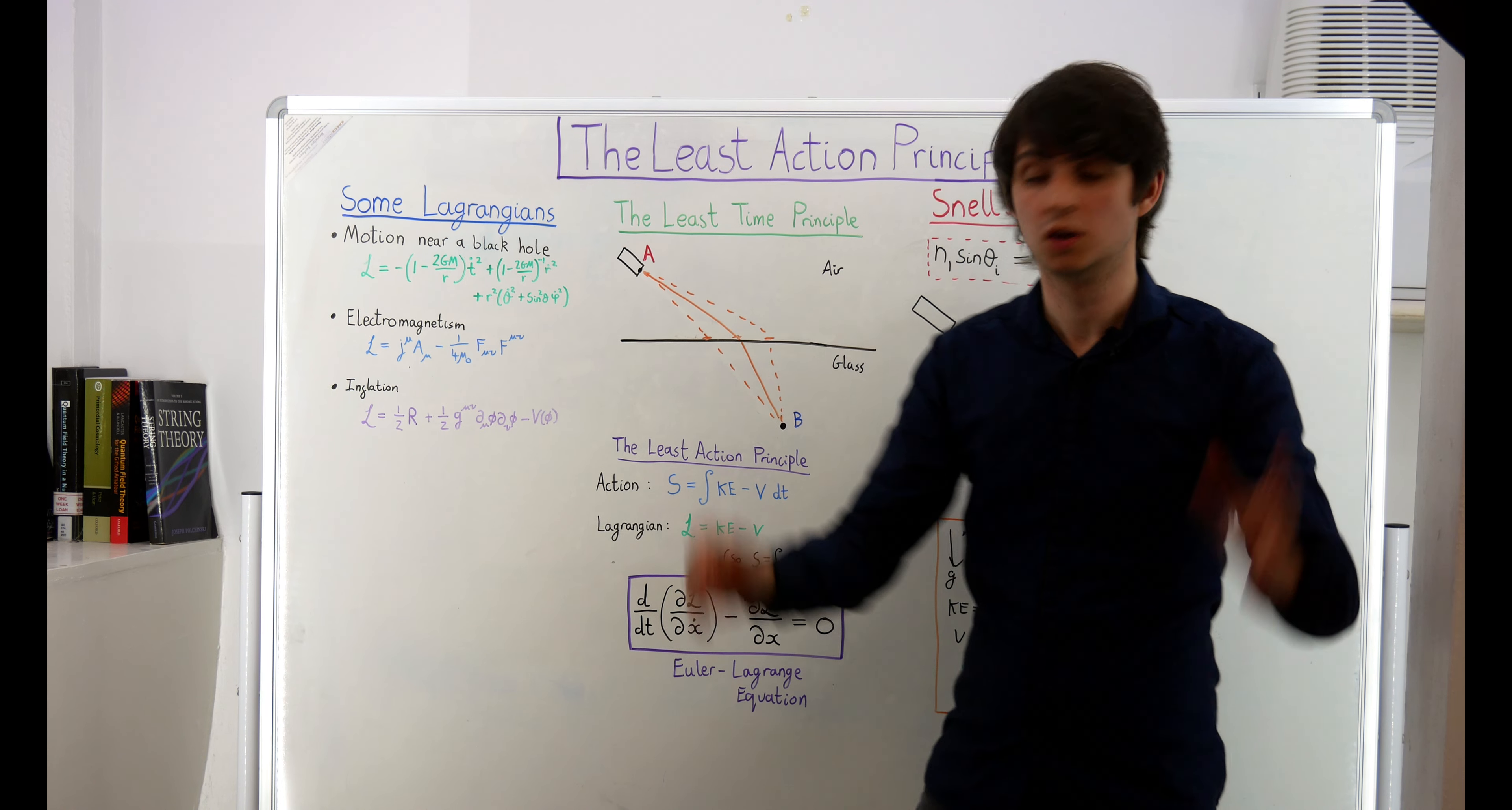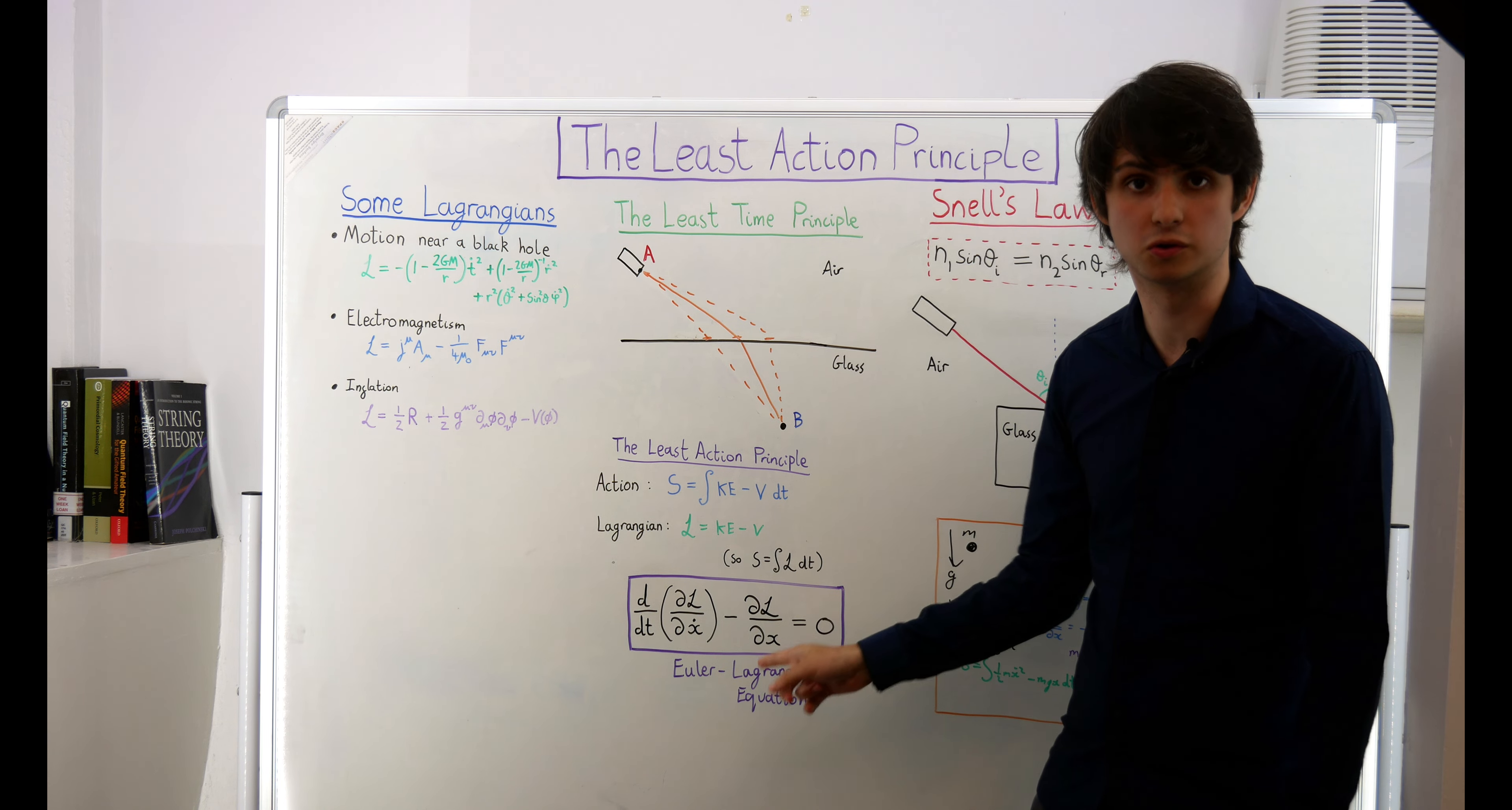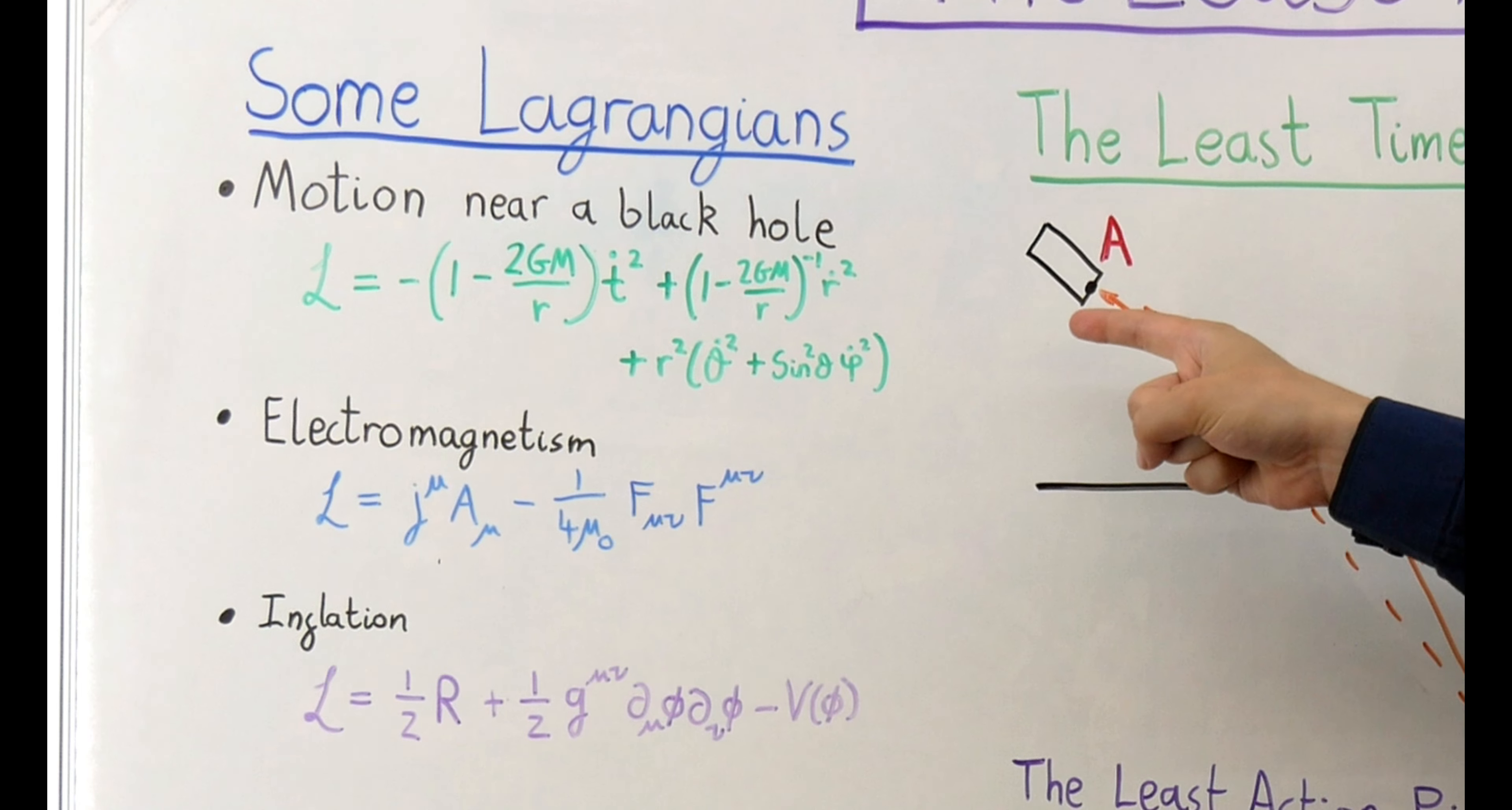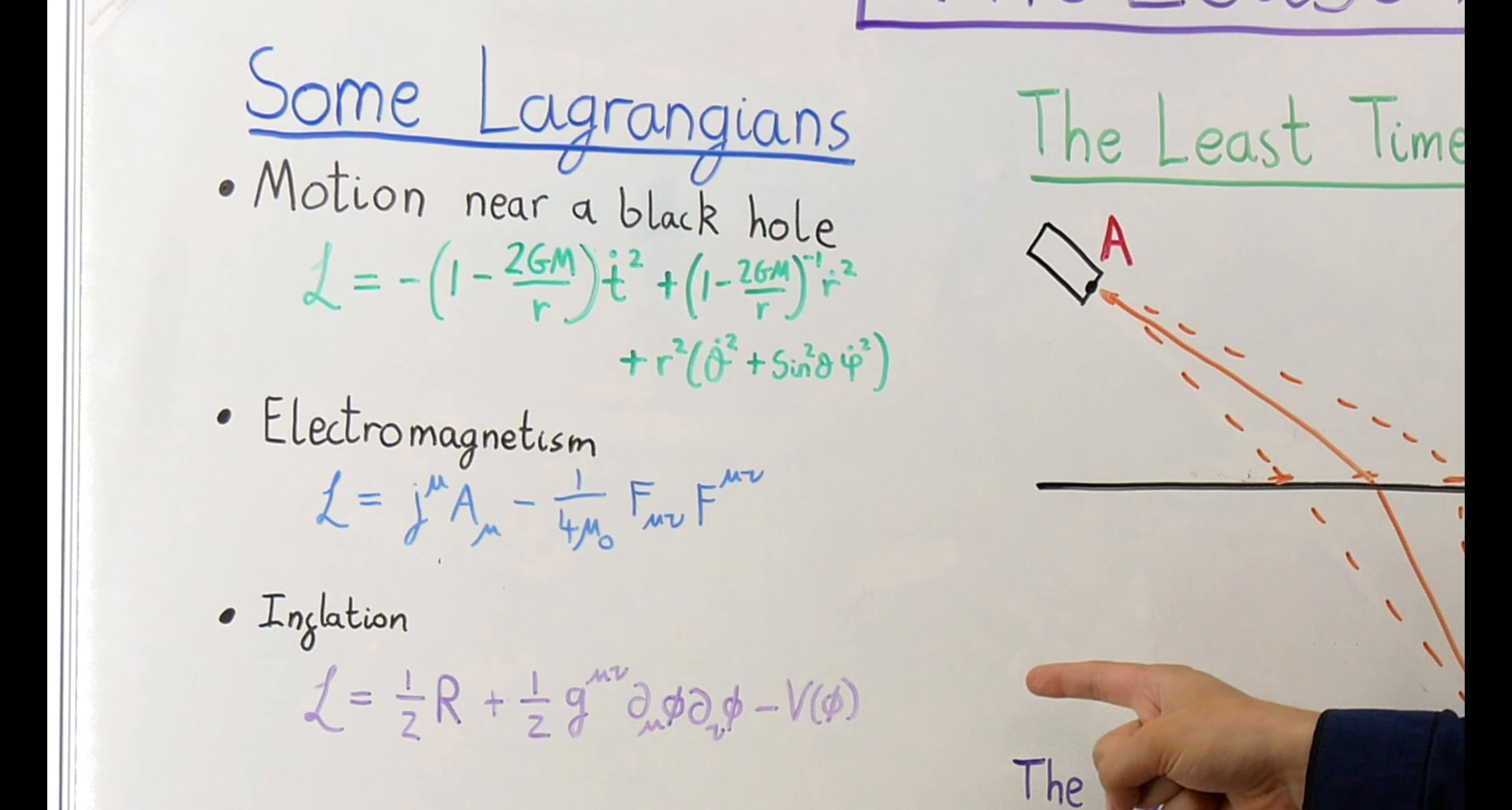Take any system, write down its Lagrangian, and then you can work out its equations of motion from the Euler-Lagrange equation. Here's a few examples. This is the Lagrangian for a particle in the vicinity of a black hole. This is the Lagrangian for electromagnetism, and this is the Lagrangian for a scalar particle in quantum field theory.